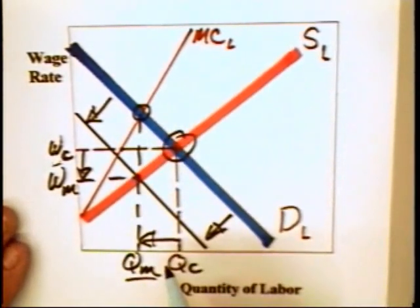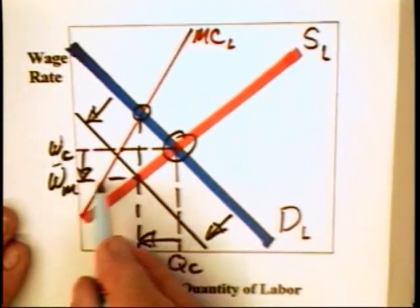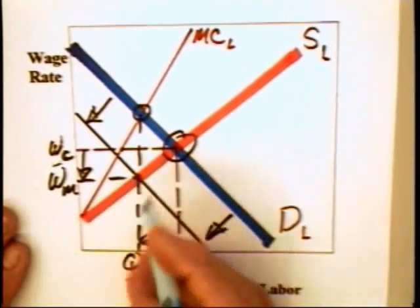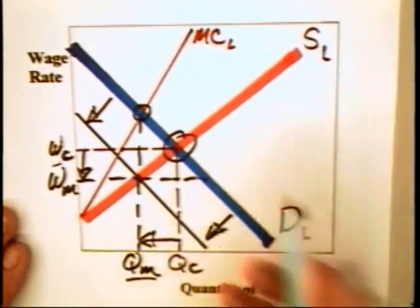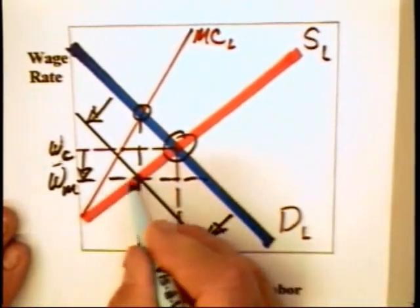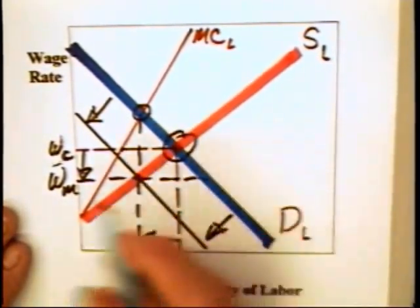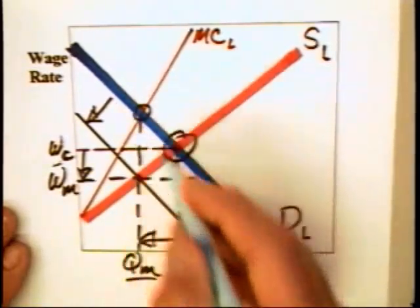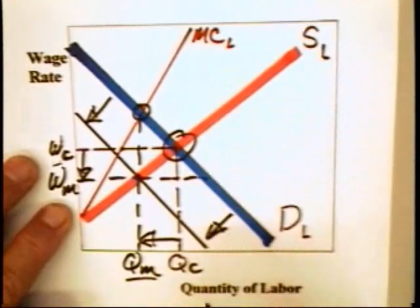But the problem here is that cartels have a difficult time holding together in the labor market as well as in the final product market. There will be employers out here who would be willing to hire more workers, as indicated here. Why? Because the marginal value of workers is greater than the additional cost that they would have to pay. But as a consequence, an employer cartel could break down as the wage rate is bid upward.